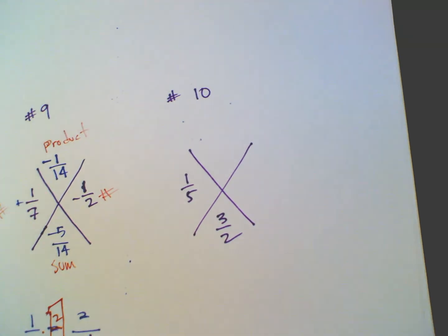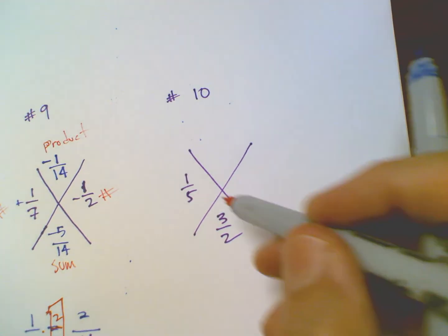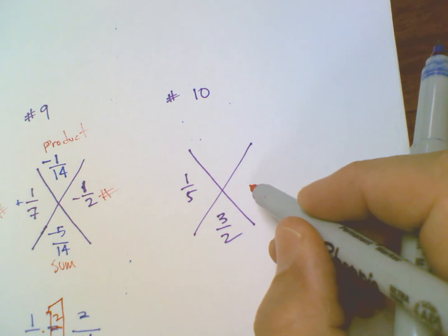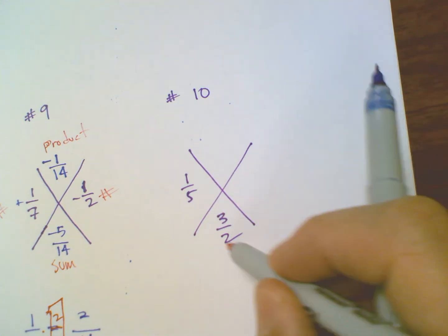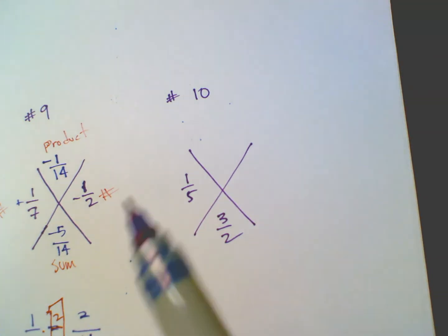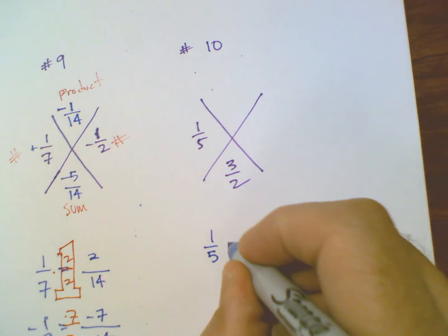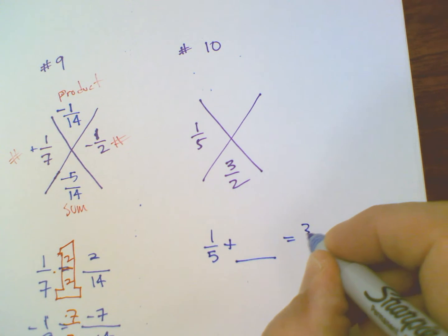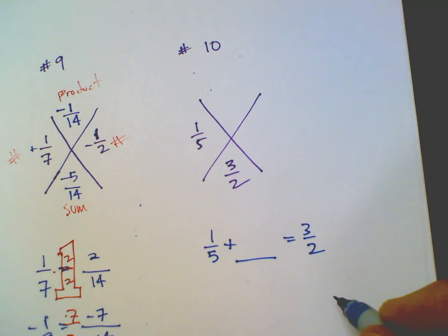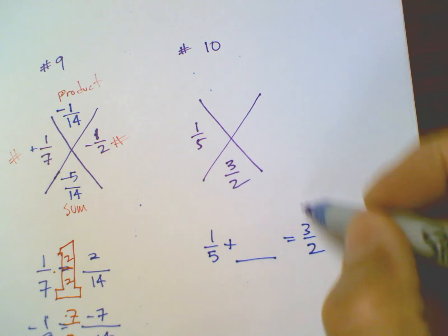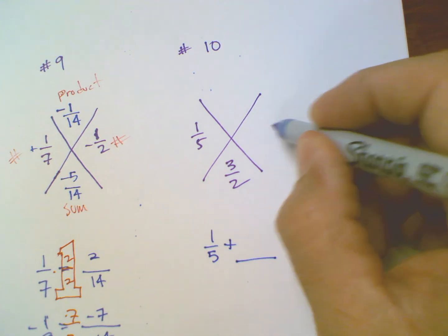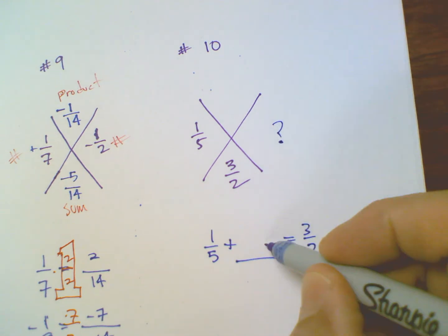So number 10, we're looking at, now it's a little trickier because now I'm looking for the sum. So this is the sum. So I have a situation here where I'm looking at 1/5 plus something is equal to 3/2. So I've got to figure out what that something is. What is my missing number over here? And that's what this is. What is that missing number?